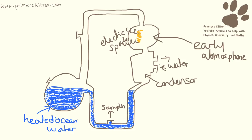This is the setup that they used. Over here we have the early ocean, or as close to the early ocean as they could get it. You're going to have loads of different things dissolved in there — water and all of the different gases. They heated this up so all of the gases evaporated upward. Then in this section, lots of electrical sparks run through, trying to stimulate the early lightning. This is a condenser where things turn back into water, and then down here we have a small reservoir of water where they can take samples out.